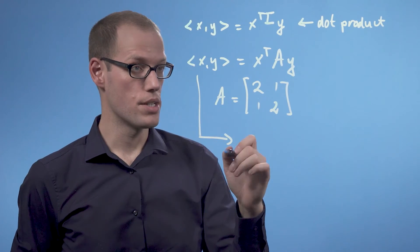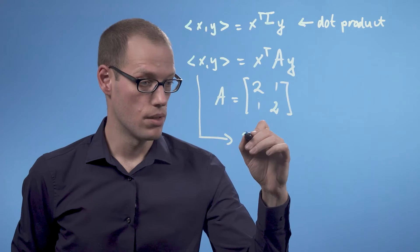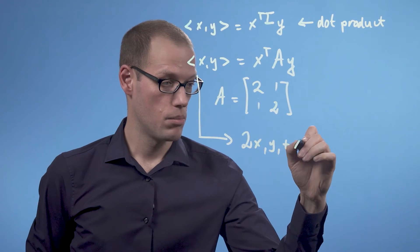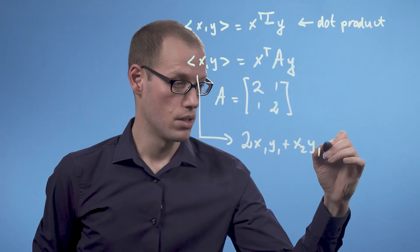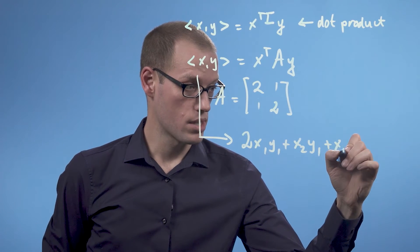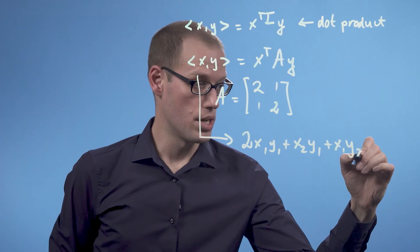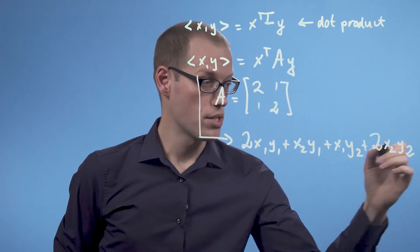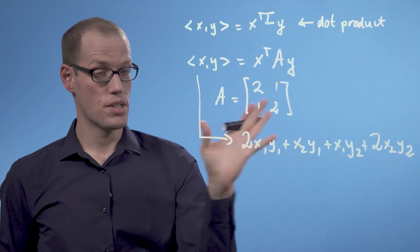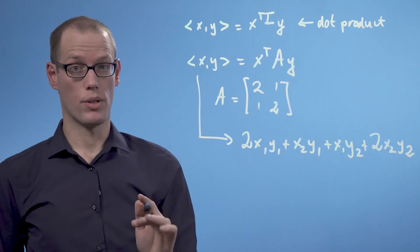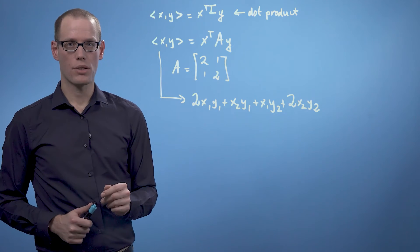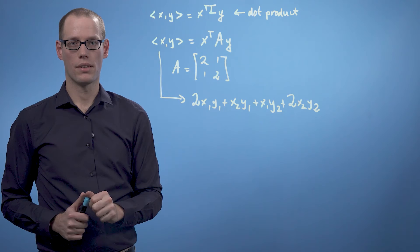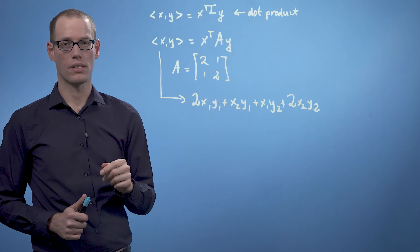With matrix A = [2, 1; 1, 2], we can write our inner product as 2 times x₁y₁ plus x₂y₁ plus x₁y₂ plus 2 times x₂y₂. This inner product is different from the dot product. Any symmetric positive definite matrix in this equation defines a valid inner product.